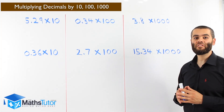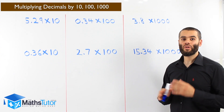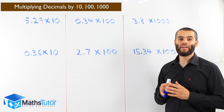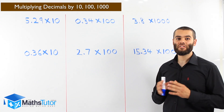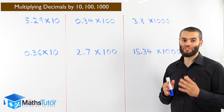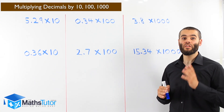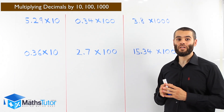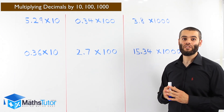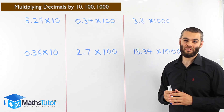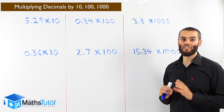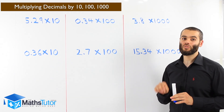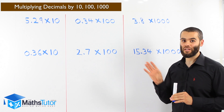Hey guys. In a previous lesson, we learned how to multiply decimals by a whole number. Now we're going to learn how to multiply decimals by ten, hundred, or a thousand the easy way. I've seen students do it the long way and it takes forever and you're bound to make mistakes. This way is very easy, very straightforward. As I've always taught you, I always show you the easy way. Let's do it.